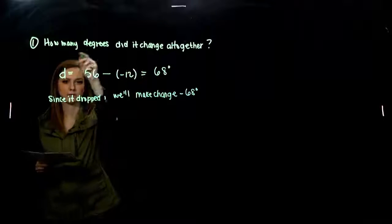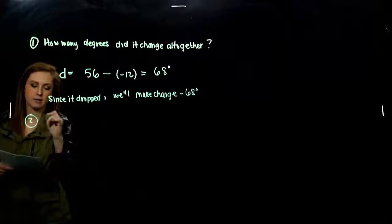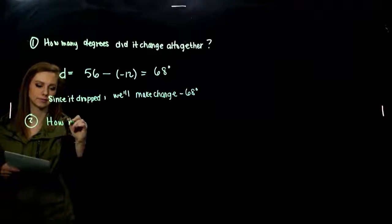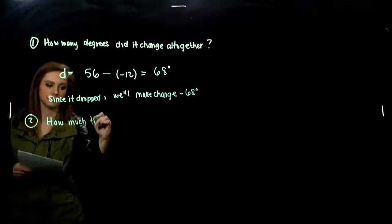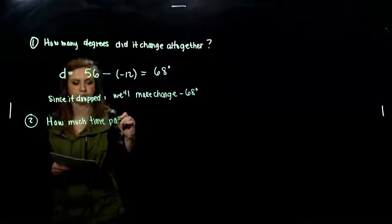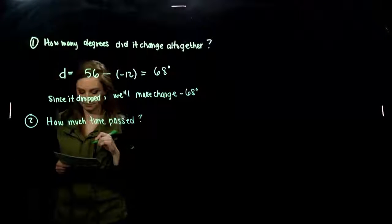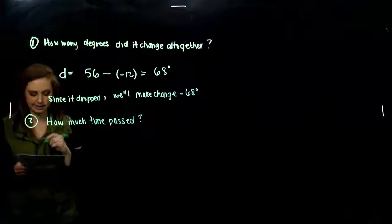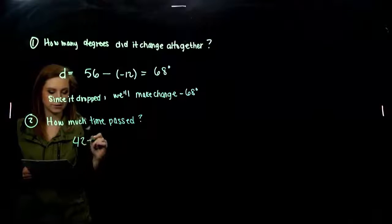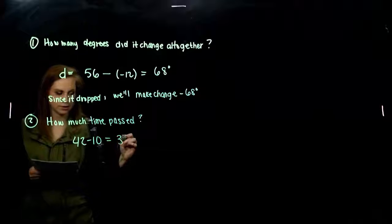So that was the total change in temperature. What about how much time had passed? How much time in between there? So we started at 10:10, ended at 10:42. So the difference between 42 and 10 is 32 minutes.